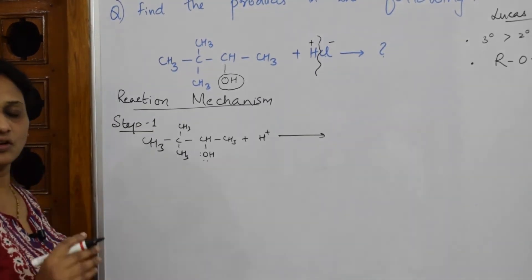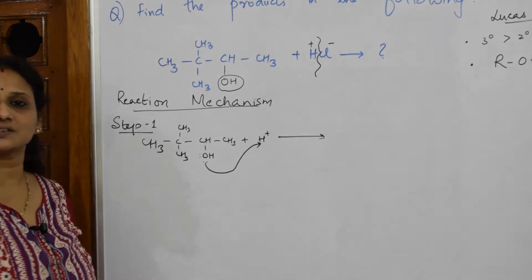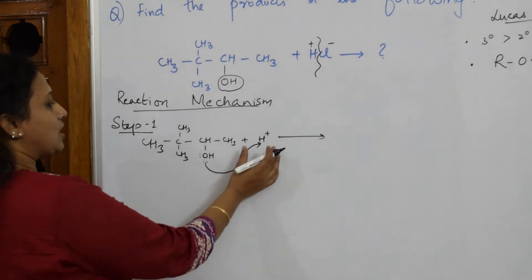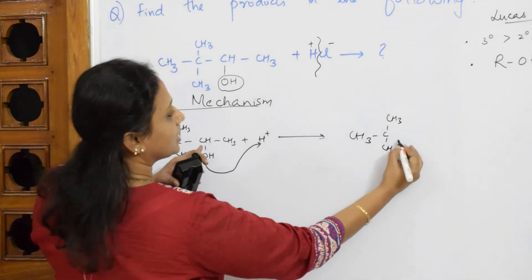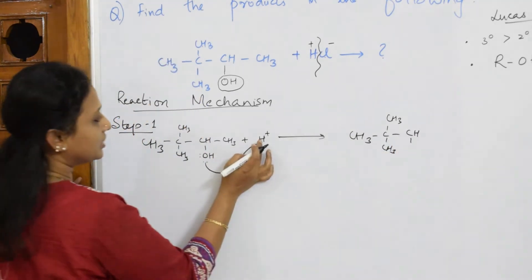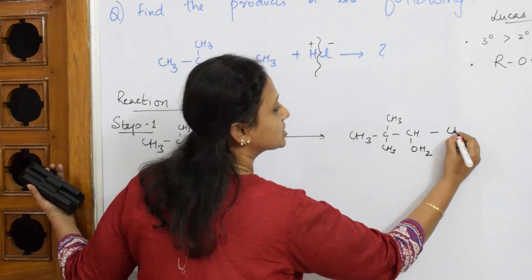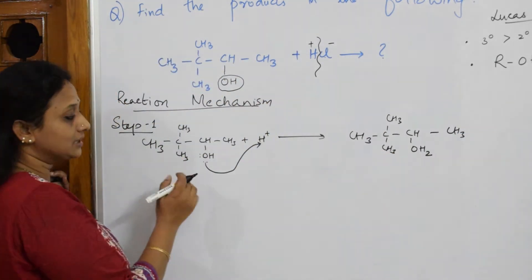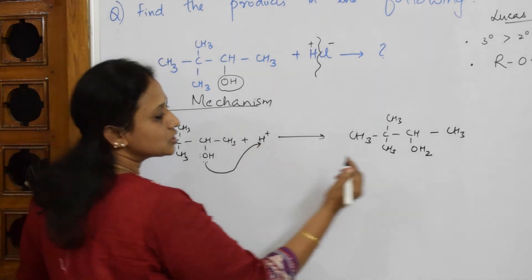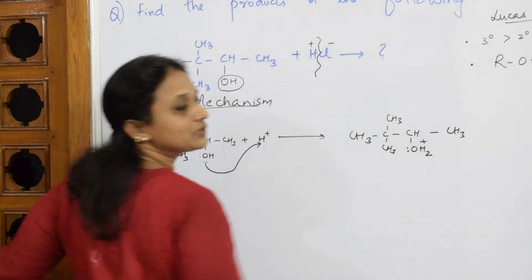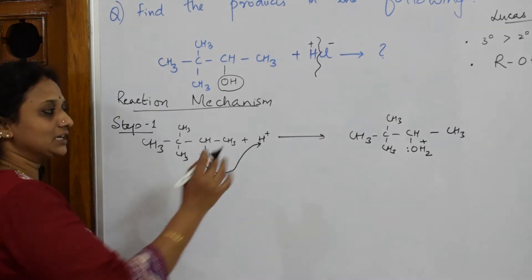The oxygen has eight electrons satisfied. This oxygen is going to share a pair of electrons with the H⁺. When oxygen shares with H⁺, the compound becomes CH₃–C(CH₃)₂–CH(CH₃)–OH₂⁺. Because oxygen has donated a pair of electrons to H, only one lone pair is left on oxygen, and the oxygen attains a positive charge. Step 1 — protonation — is now complete.